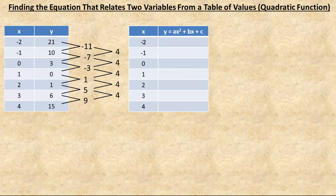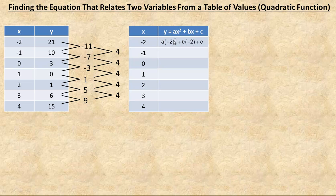If you start at 0, then the tables don't match up as well, and it's a little more challenging to figure out what over here corresponds to what over here. So if I put negative 2 in place of x, it would be a times negative 2 squared — substituting negative 2 in place of x, not a — and negative 2 goes in place of x for the b term, so it's b times negative 2. Negative 2 squared is positive 4, so that's going to be 4a minus 2b plus c.